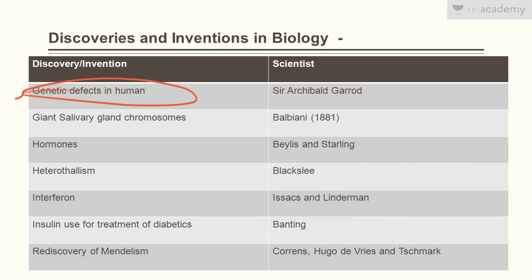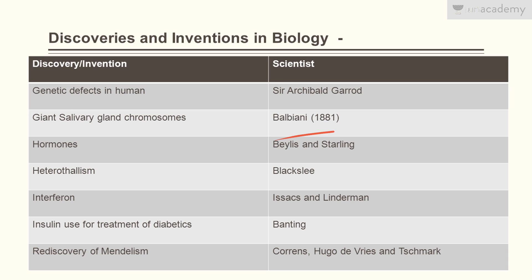Genetic defects in humans were discovered by Sir Archibald Garrod. Giant salivary gland chromosomes were discovered by Balbiani in 1881. Hormones were first discovered by Bayliss and Starling. Heterothallism was discovered by Blakeslee.